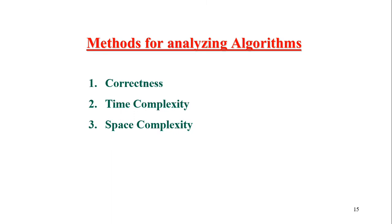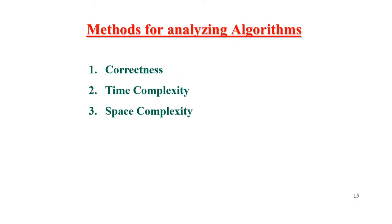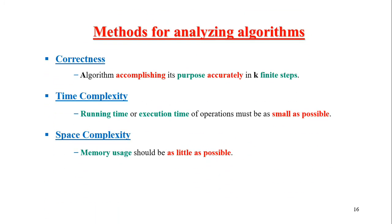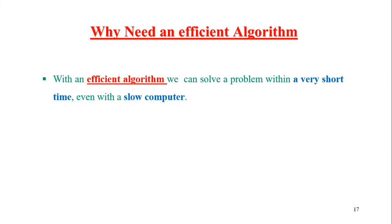The algorithm will be analyzed by three methods. Number one is correctness. Number two is time complexity. And number three is space complexity. Correctness means the algorithm will accurately complete in finite steps. Time complexity means the running time or execution time should be small — if running time is large, the algorithm will be less efficient. The algorithm can use efficient methods to limit execution time.